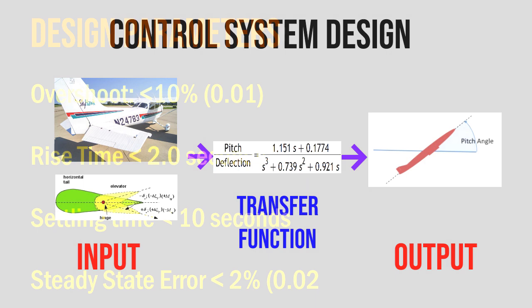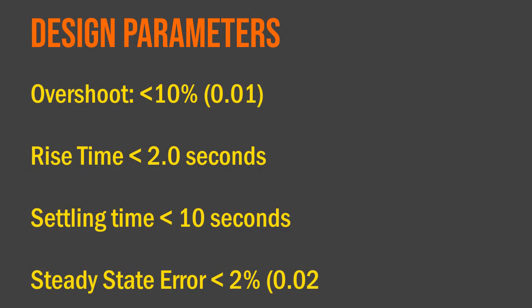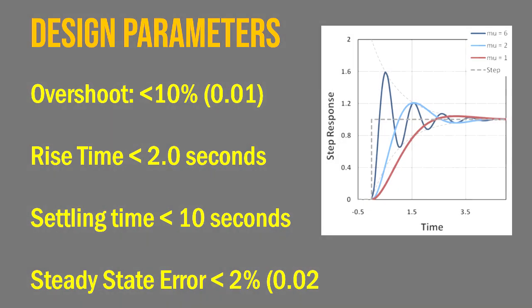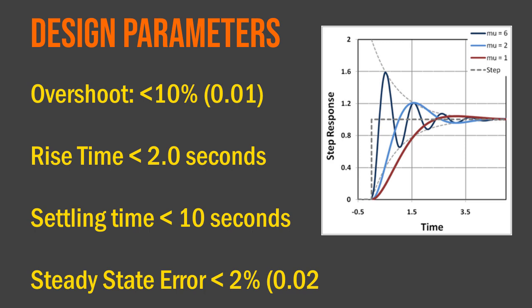Next, the design parameters: we'll be using an overshoot of less than 10 percent, a rise time of less than two seconds, a settling time of less than 10 seconds, and our goal is to obtain a steady state error of less than two percent. We'll be using a step input of 0.2 radians, which means we will command the elevator to deflect 0.2 radians and our goal is to have the aircraft pitch the same value.